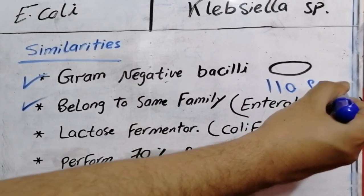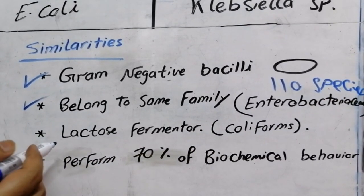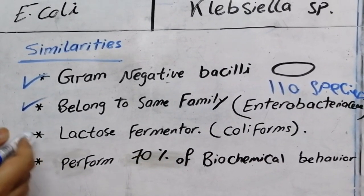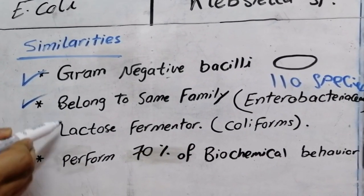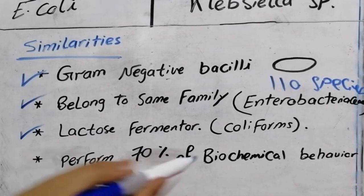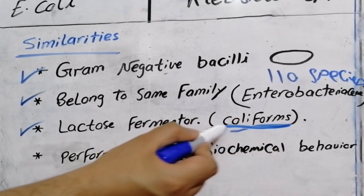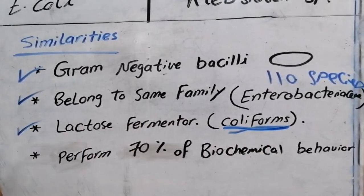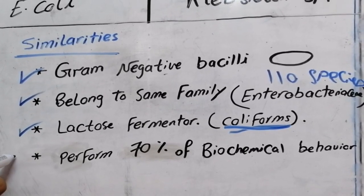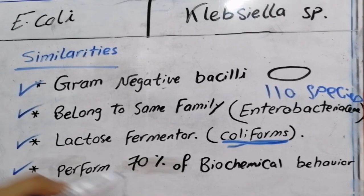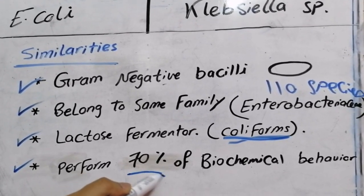E. coli and Klebsiella have the ability to ferment lactose, so they are lactose-fermenter Enterobacteriaceae, which turn to coliforms. During performing the biochemical tests, they almost perform the same reaction.